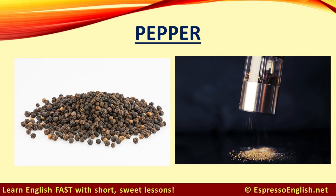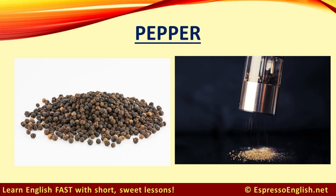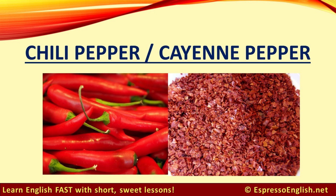Pepper. The small balls are called peppercorns and we often make them into a powder by using a grinder. Chili pepper or cayenne pepper. Chili pepper is a hot pepper, making things very spicy.